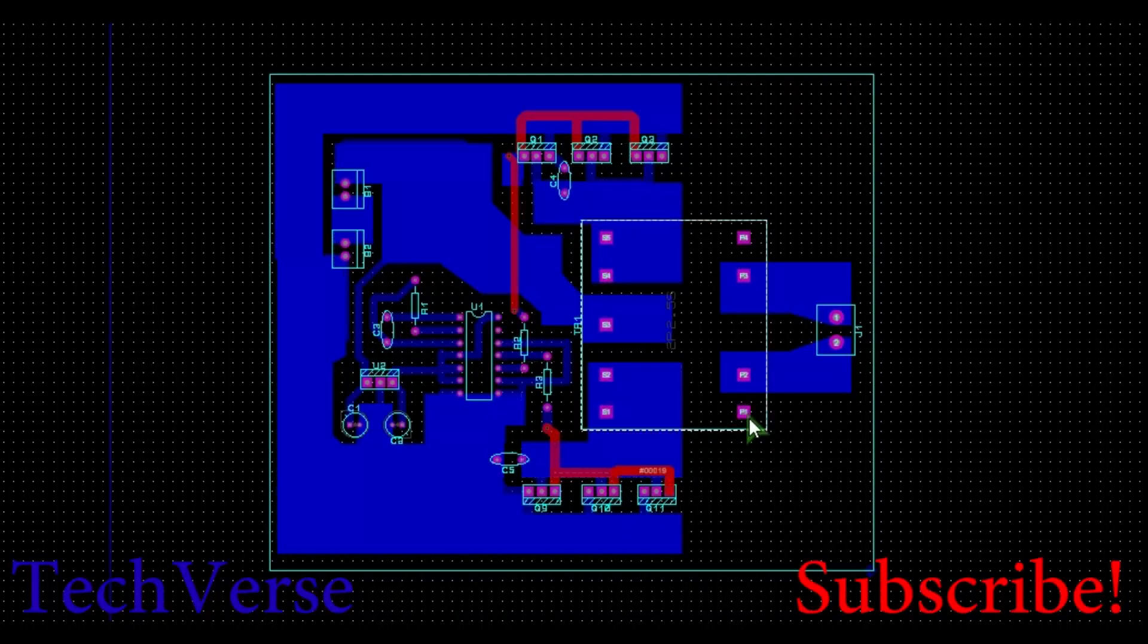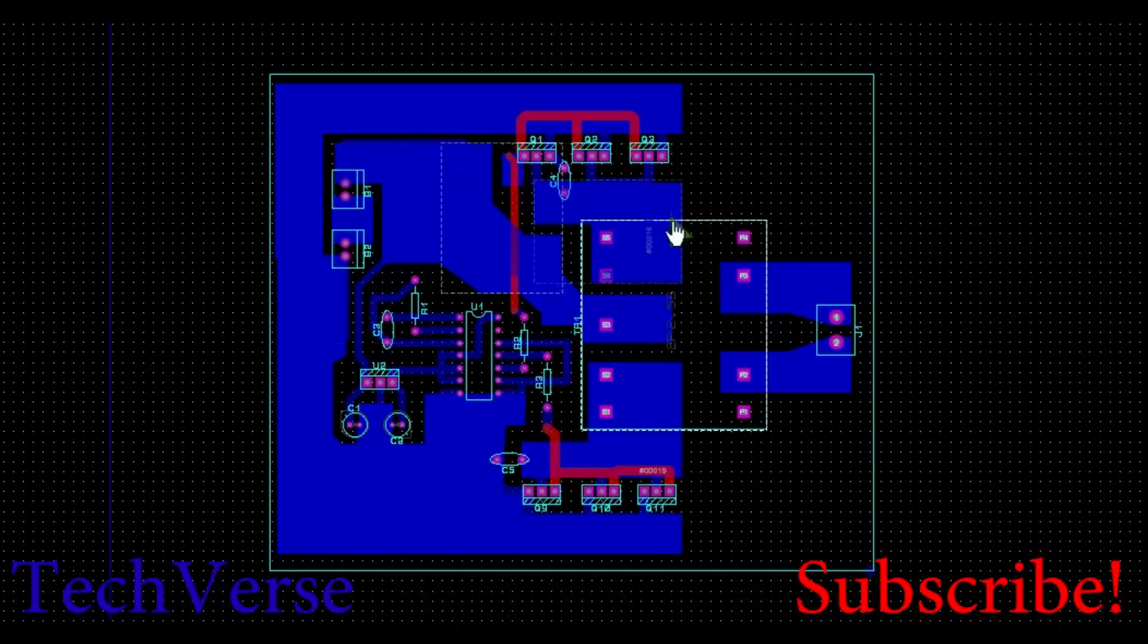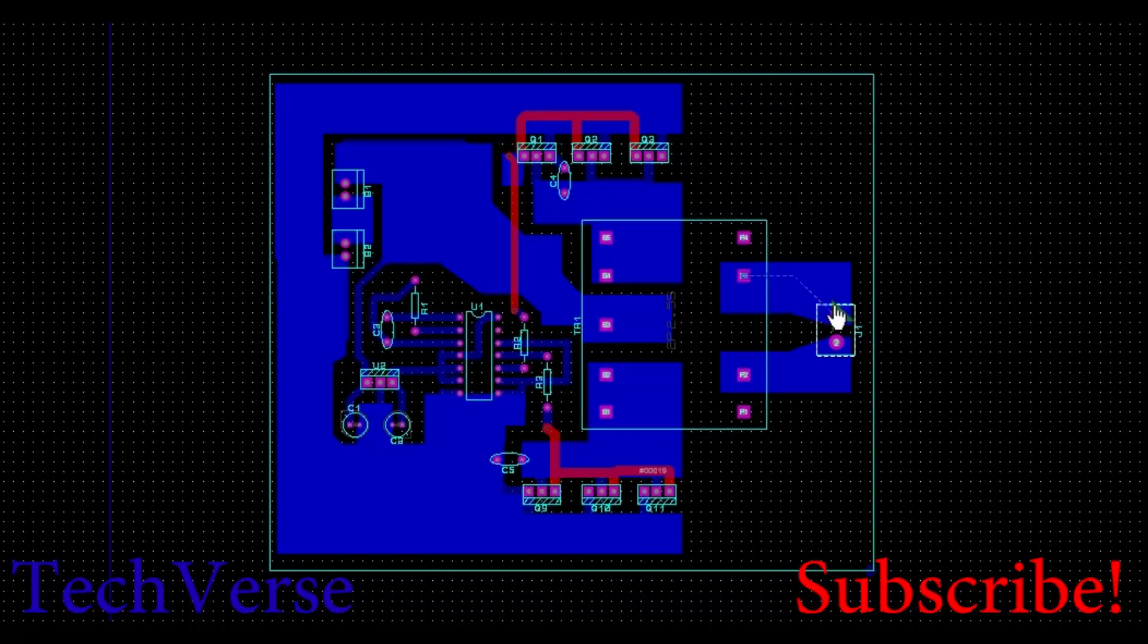If you intend to use a power transformer, connect the primary windings to this track, the center tap, and the other side. If not, you can omit this. Here you have your high voltage AC output.